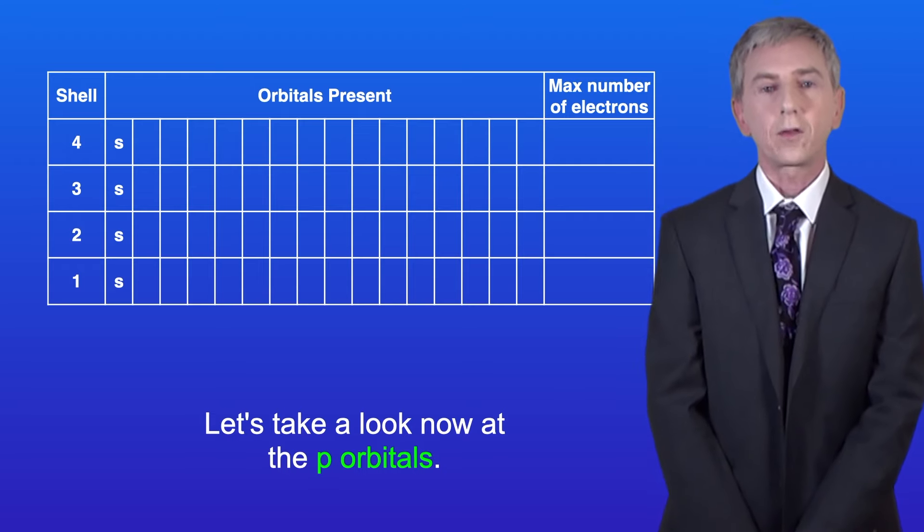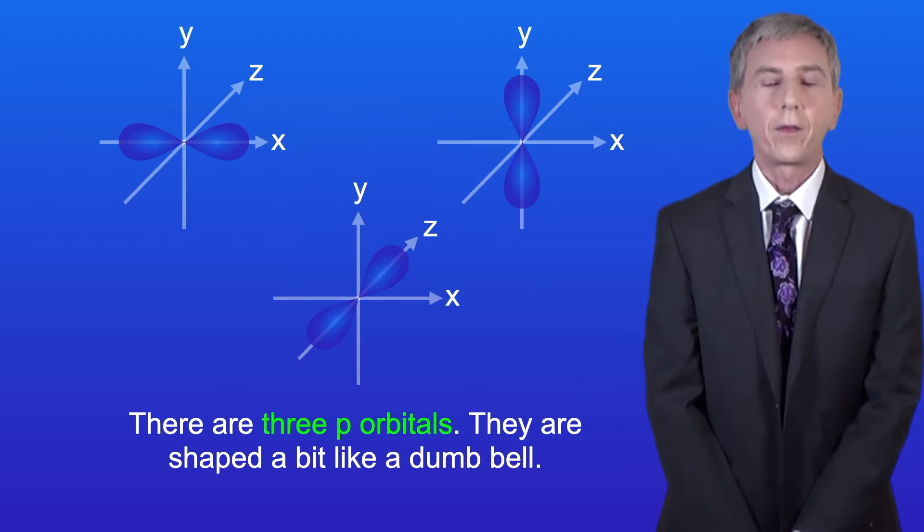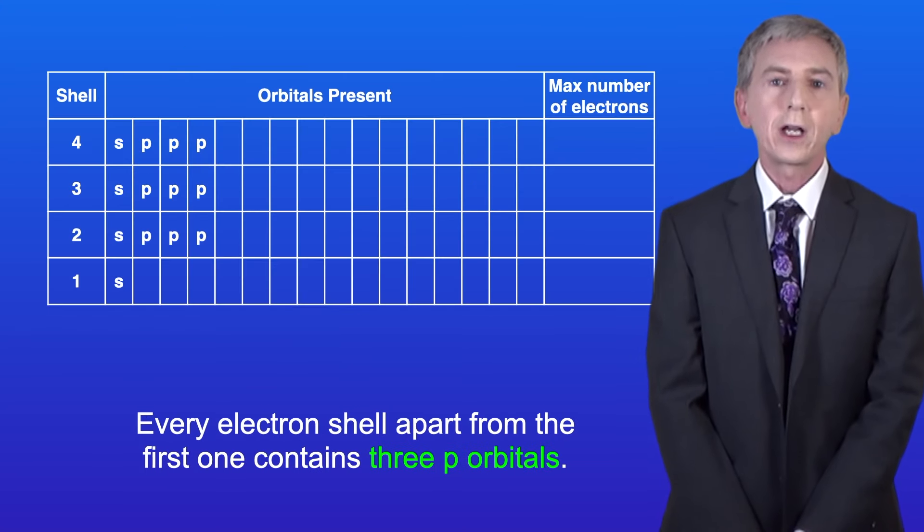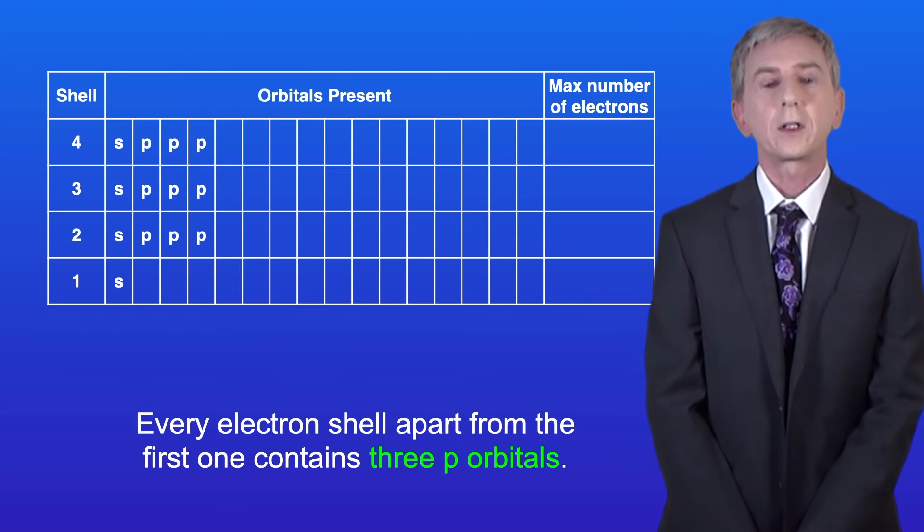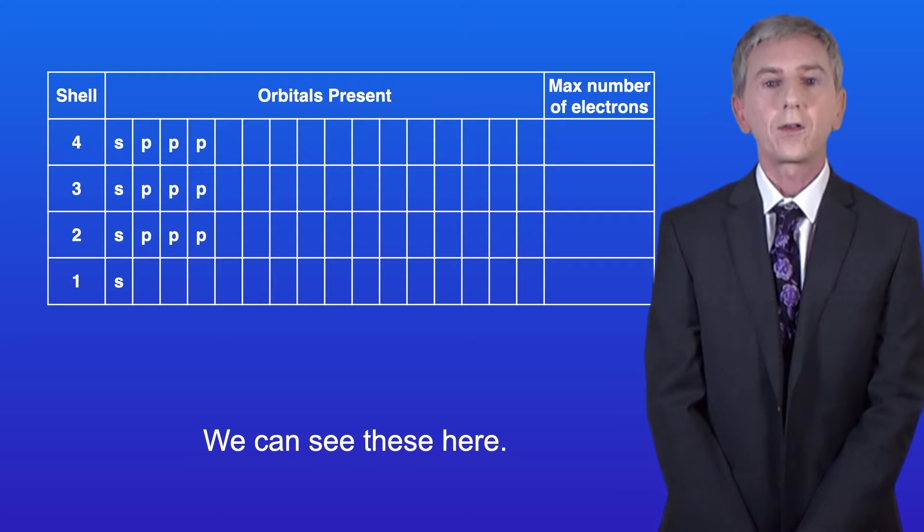Let's take a look now at the P orbitals. There are three P orbitals, and they're shaped a bit like a dumbbell. Every electron shell, apart from the first one, contains three P orbitals, and we can see these here.